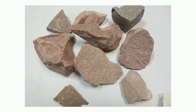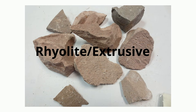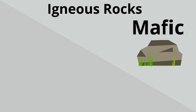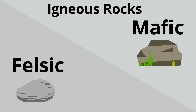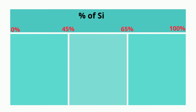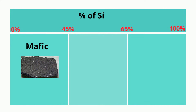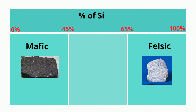Another way to classify igneous rocks is to determine if the rock is mafic or felsic. This is actually a scale of the percent of silica found in the rock. 0–45% silica is considered mafic, 65% or greater is felsic, and 45–65% is considered intermediate.